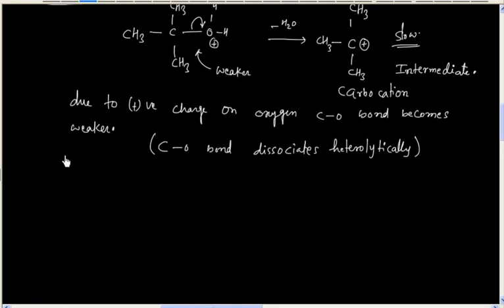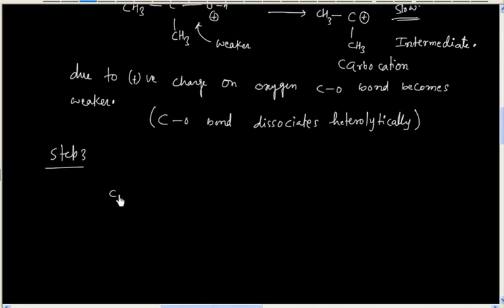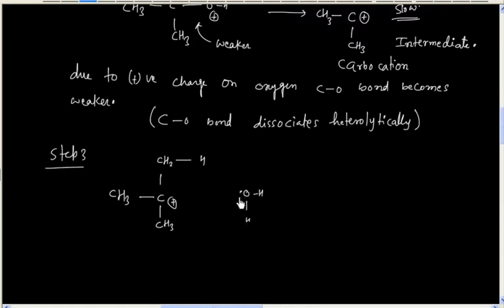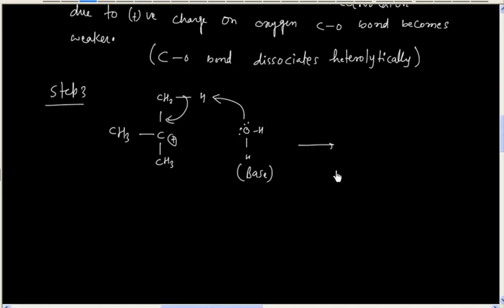In the next step, the carbocation intermediate loses H+. Water can act as a base and take H+ from the intermediate. So finally we will have an alkene.